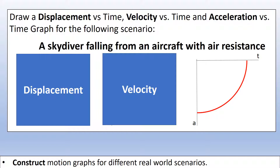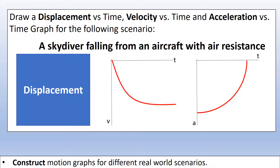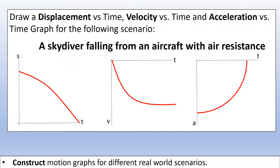Looking at the velocity graph: acceleration is always negative, so the gradient of the velocity-time graph is always negative, but it approaches zero — meaning the velocity approaches a constant terminal velocity. For the displacement graph, the gradient should always be negative but approach a constant value, which is why it becomes a straight line at the end.